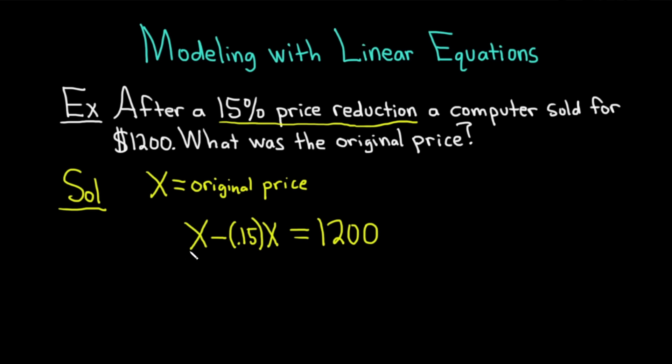There's really an invisible 1 here in front of the x. It's implied. So you can subtract these. 1x minus 0.15x is 0.85x, and this is equal to 1,200.